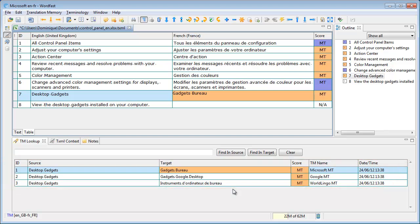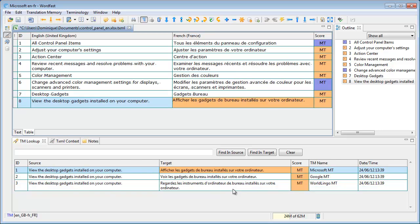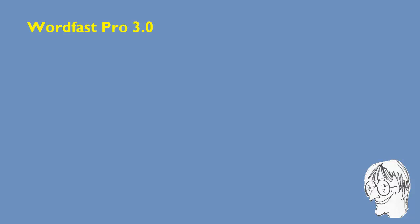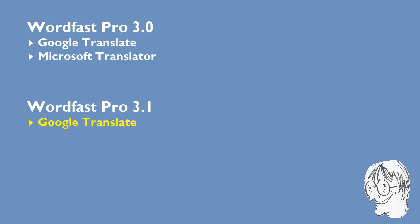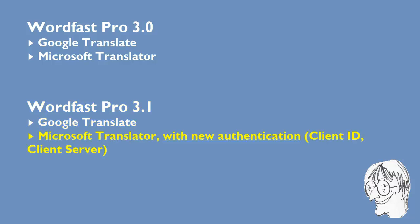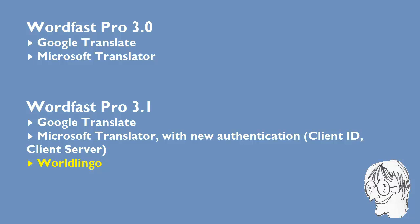And I move to the next one and I'm done. So, in a nutshell, Wordfast Pro 3.0 supports two machine translation services — Google Translate and Microsoft Translator — and the new Wordfast Pro 3.1 supports three machine translation services: Google Translate, Microsoft Translator with a new authentication method, and Wordlingo as the third MT service.